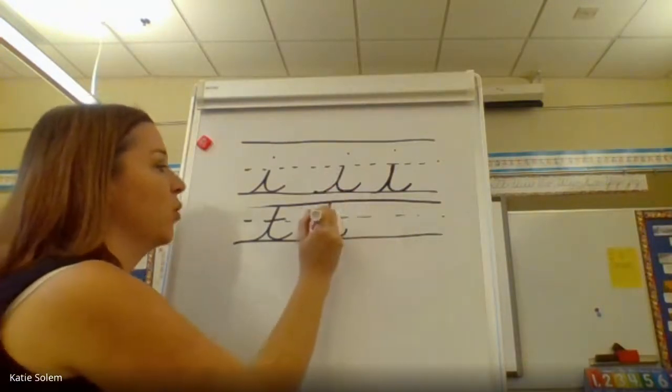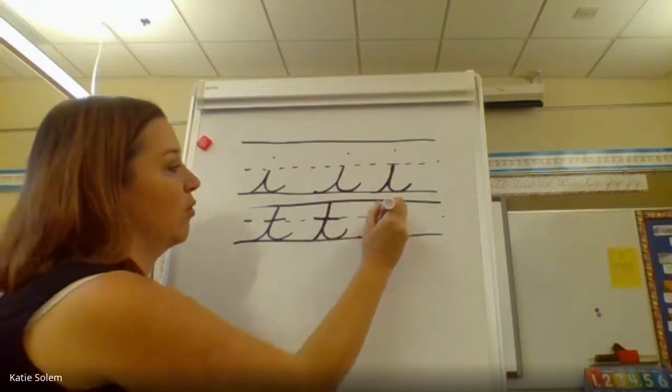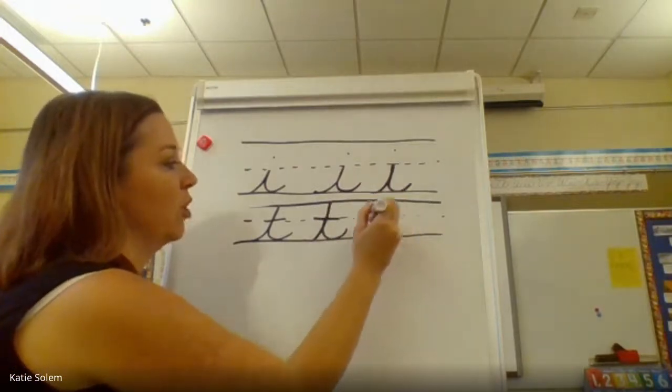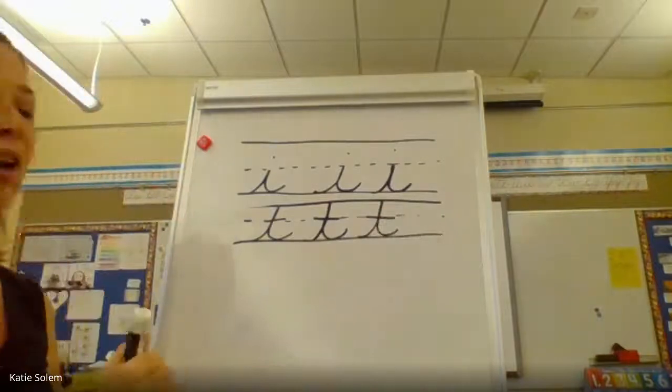Instead of a dot though we're going to cross the t. So curve up, trace down, curve out, cross it at the end.